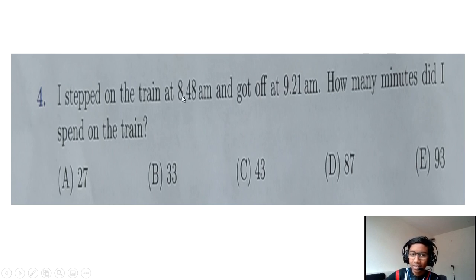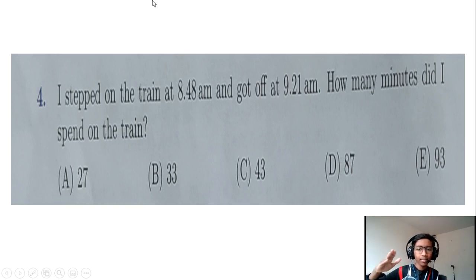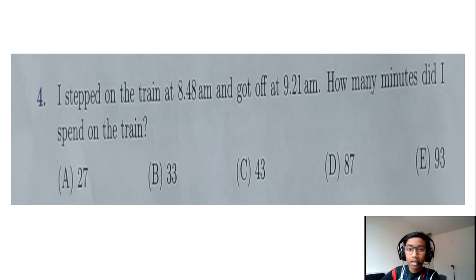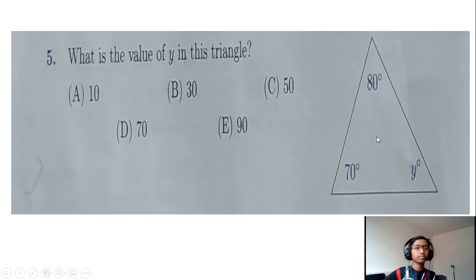Alternatively, we can count up to 9 o'clock from 8:48. We know that between 8:48 and 9:00 there are 12 minutes, and then 12 plus 21 is 33 — we get the same answer. The easier way is to just subtract the arrival time minus the departure time, giving us 33 minutes. The answer is B, 33.